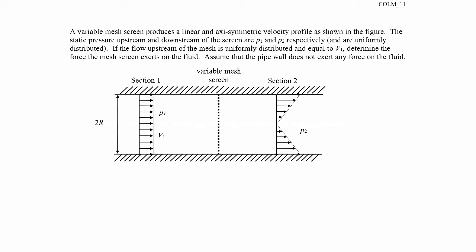In order to do that, we need to apply it to a control volume. I'll choose one that cuts across the incoming stream right here, then cuts across the outgoing stream as well, and goes along the walls of the pipe. And then it's weaving in and out of the mesh, so that the mesh is exerting a force on the fluid.